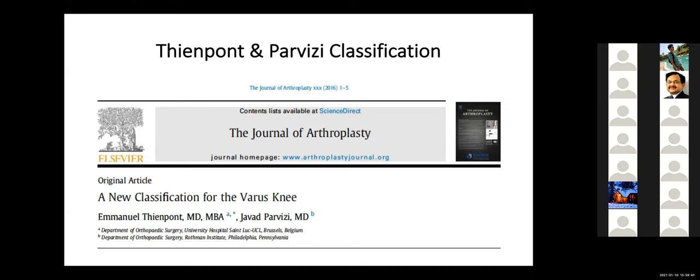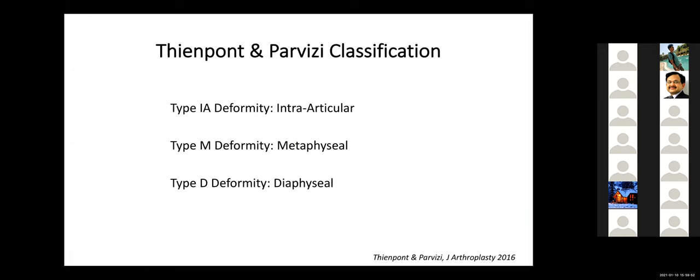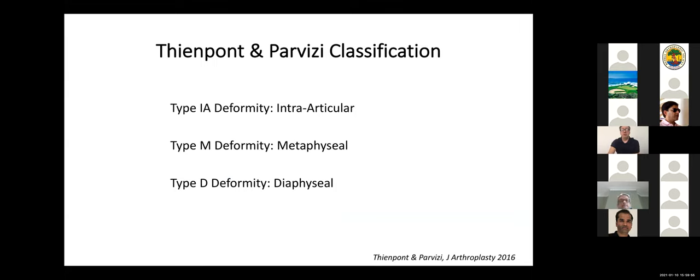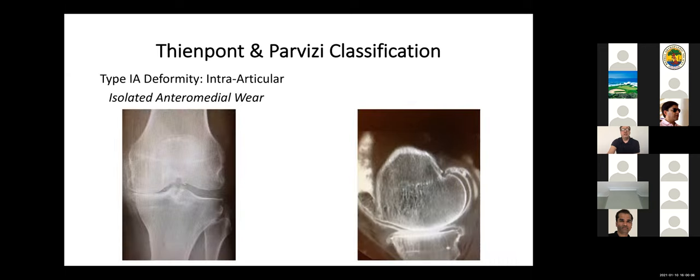Then we developed a Thijnpont and Parvizi classification, which we published a few years ago in Journal of Arthroplasty, and where we tried to understand how different varus knees exist. We made it very simple, and we decided to have three big types that would be intra-articular IA, M for metaphyseal, and D for diaphyseal deformity. And then we did a subclassification. So you can see here on the intra-articular, this is typically the patient with anteromedial wear. You see bone-to-bone osteoarthritis on the medial site. And on the ArthroCT, you can see that the anteromedial wear is present and the posteromedial site of the cartilage is perfectly intact. This means that the deformity is correctable.